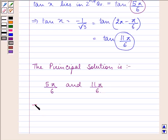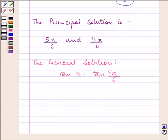Proceeding to find the general solution: tan x equals tan y, where y is 5 pi by 6.